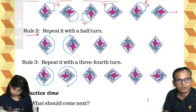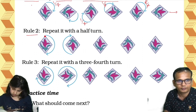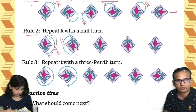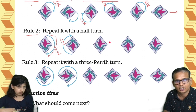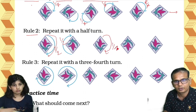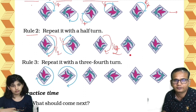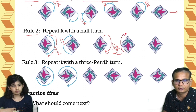Rule two: repeat it with the half turn. From here to here it is turned half. Again a half turn and you get this image. Again the same image you get, and again you turn it half — again you get this one. With the half turn you get this image.